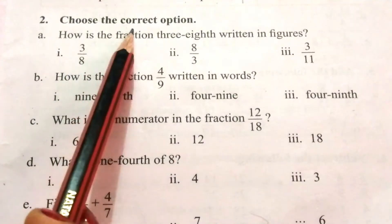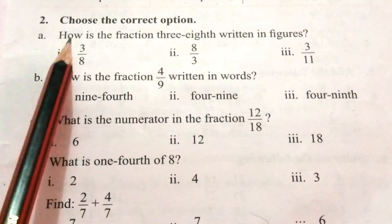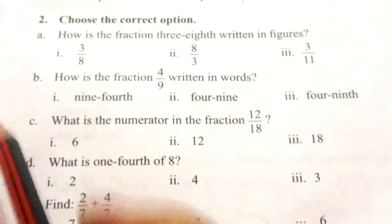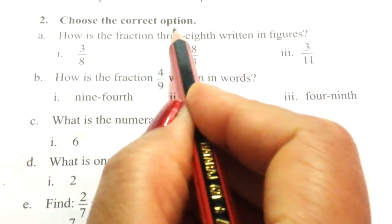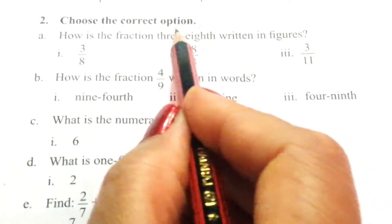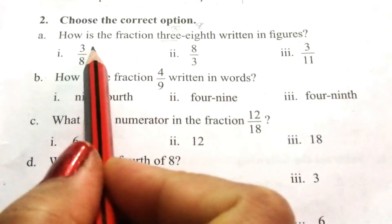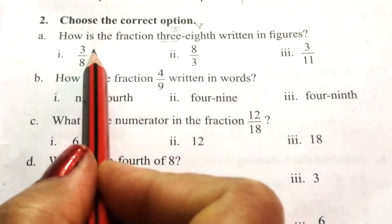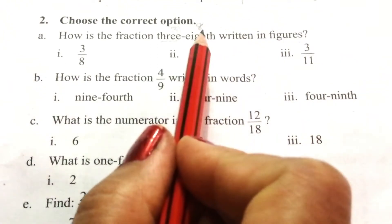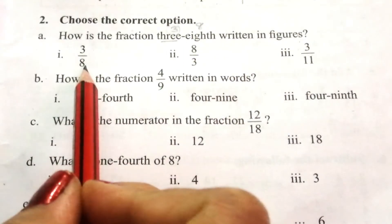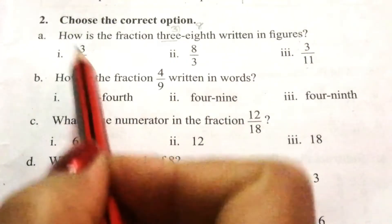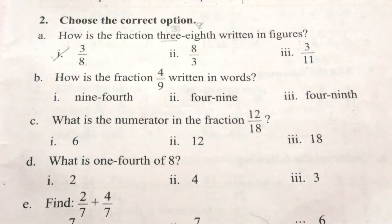Question 2: Choose the correct option. Part A: How is the fraction 3 by 8 written in figures? The first number is the numerator, so the top number is 3, and the denominator is 8. So 3 by 8 is the correct answer.